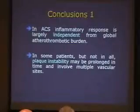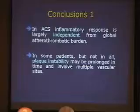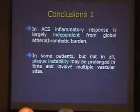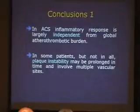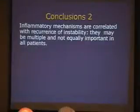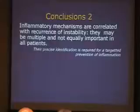In monocytes ex vivo, these patients respond to lipopolysaccharide by producing much more interleukin-6 than monocytes of patients who do not have elevated CRP and interleukin-6. So in conclusion, in acute coronary syndromes, inflammatory response is largely independent from the global atherothrombotic burden. In some patients, but not in all, plaque instability may be prolonged in time and involve multiple vascular sites. If we have to deal with this problem from a different angle, we need to learn more — we have to walk before we run. Inflammatory mechanisms are correlated with recurrent instability, may be multiple, and are not equally important in all patients.